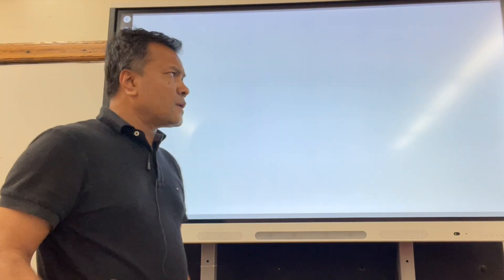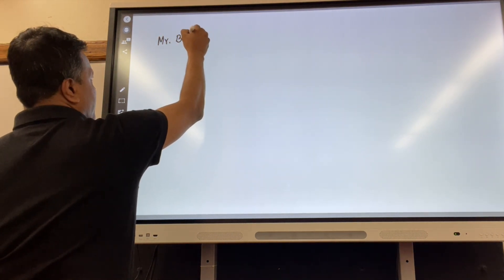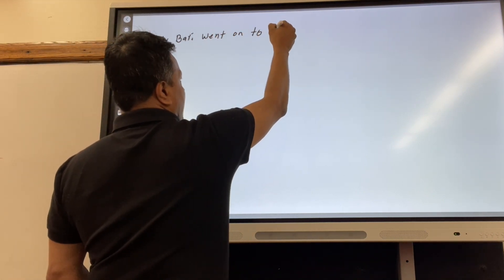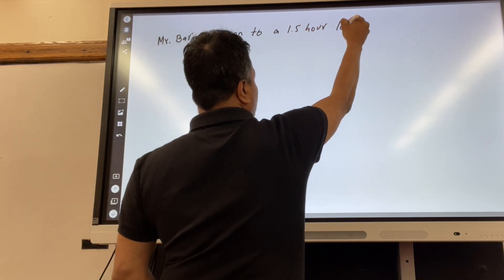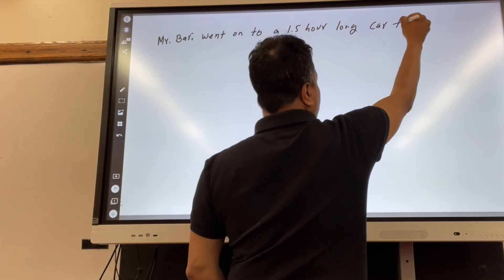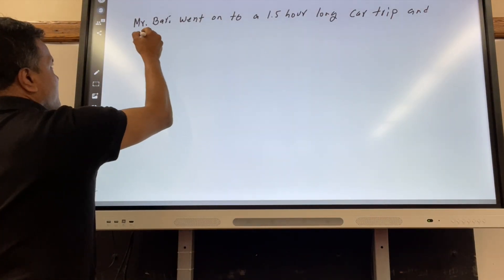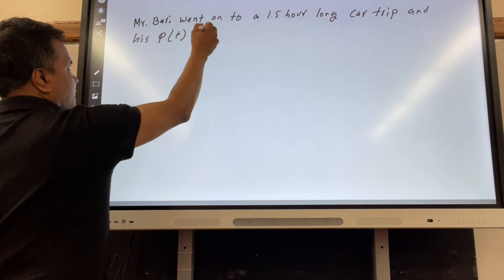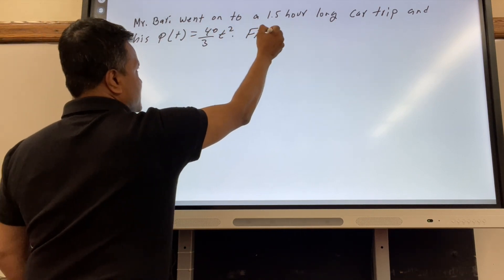This is the first tutorial for the physics test tomorrow. The problem is: Mr. Berry went on to a 1.5 hour long car trip and his position function is 40 over 3 t squared. Find his final velocity.